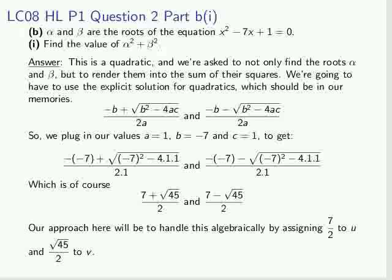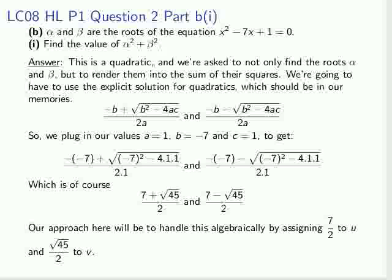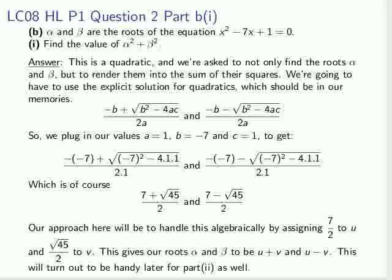We're going to assign 7/2 to u and the root of 45 over 2 to v. So that means we can express alpha and beta as u + v for alpha and u - v for beta. And this will turn out to be handy in part 2.